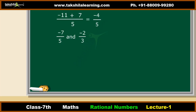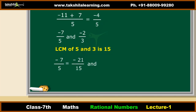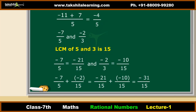If the denominators are not the same, we first find the LCM of the denominators. Here the LCM is 15. Then we find the equivalent rational numbers with this LCM as the denominator. Minus 7 by 5 is equivalent to minus 21 by 15, and minus 2 by 3 is equivalent to minus 10 by 15. Then we add the two rational numbers.